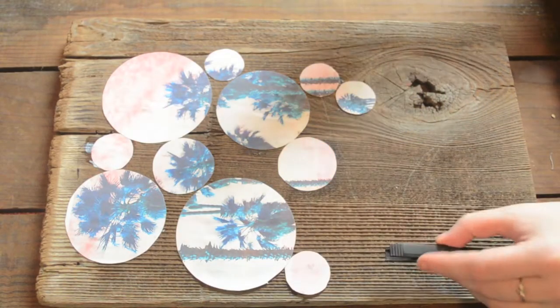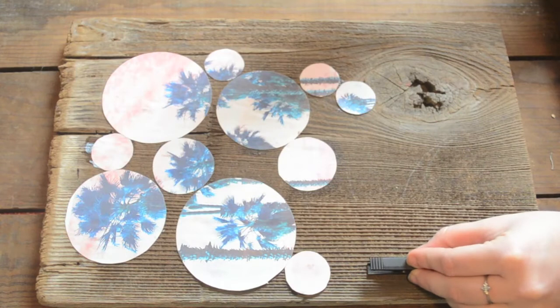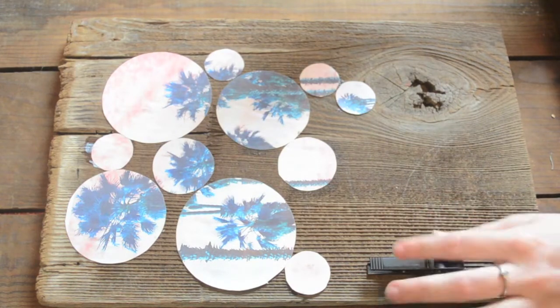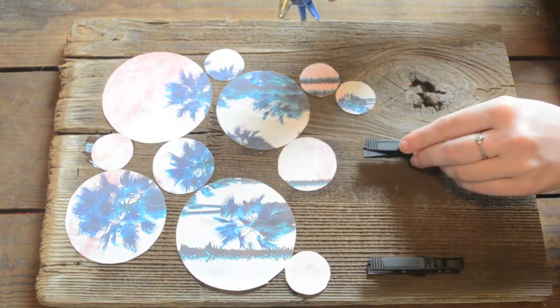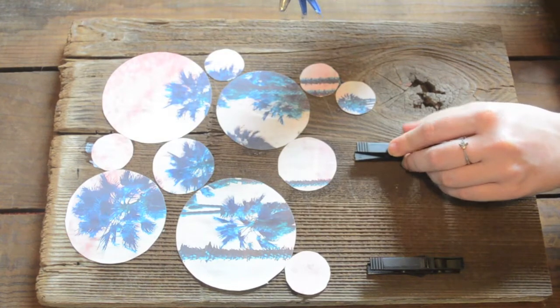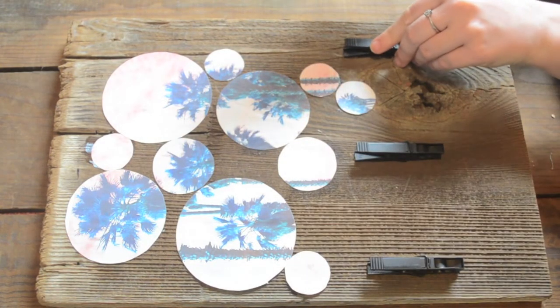Once everything is dried, I took the books off and then I added some clothespins. You don't have to do this, you can totally leave it how it is because I think it would be cute that way. But I wanted to add something extra, so I just hot glued some clothespins on.